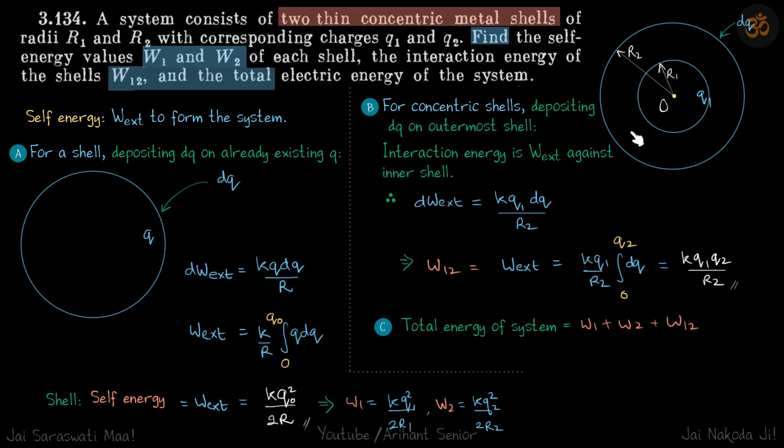So we have two shells, so let's fix the inner shell. So we will fix the Q1, and then slowly start to deposit charges on the external shell. So let's say we deposit dQ charge. So for concentric shells, depositing dQ on outermost shell, interaction energy is work external against inner shell.